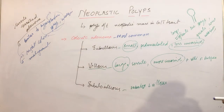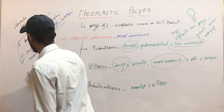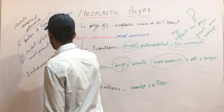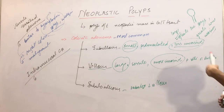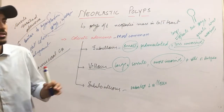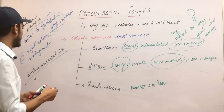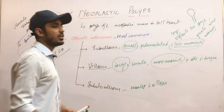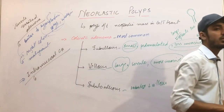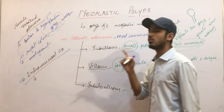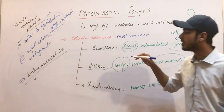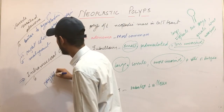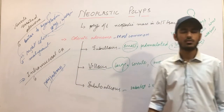Another important term is intramucosal carcinoma. This is when carcinoma breaches the basement membrane and tries to reach towards the lamina propria or muscularis propria. One important point: the lymphatic channels in the colon are not functional. That's why metastasis does not occur. Since metastasis does not occur, polypectomy can be done and the condition can be cured.